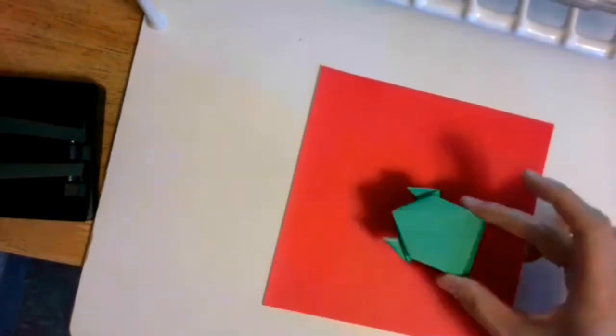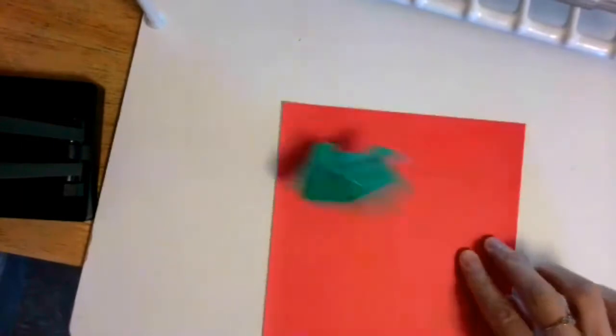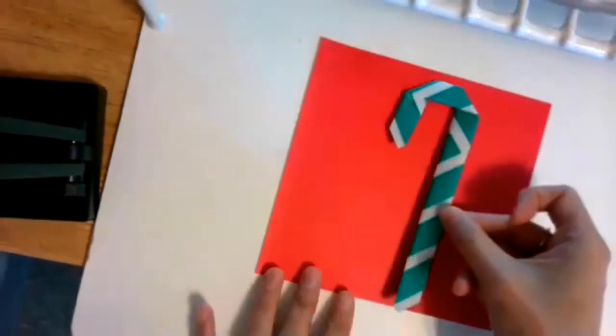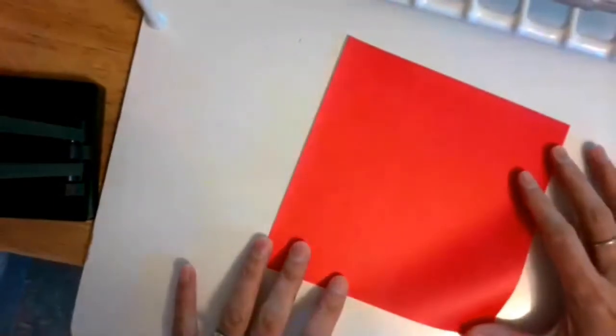Okay, is everybody ready? Oh, somebody folded a frog before? That's really fun, the frog that jumps. I have one right here. You can find instructions on YouTube. Anyways, we'll be folding a candy cane. Start with a six by six inch origami paper.